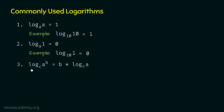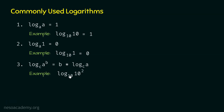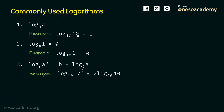The third logarithm is log A power B base C, which is equal to B times log A base C. The power comes before the logarithm — this is the most frequently used property. For example, log 10 power 2 base 10 equals 2 times log 10 base 10. Since log 10 base 10 is 1, we get 2 times 1, which equals 2.